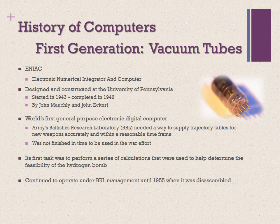Let's start this journey with a little bit of the history of computers. There have been different generations of computers. We'll start with the first generation, also known as the vacuum tube era. The computer that started this revolution is known as ENIAC, which stands for Electronic Numerical Integrator and Computer, designed and constructed at the University of Pennsylvania. It was the world's first general purpose electronic digital computer.